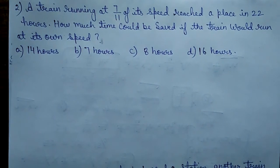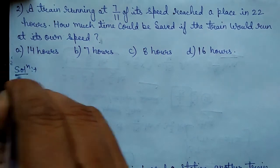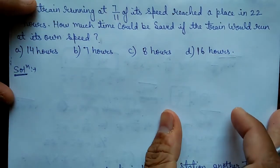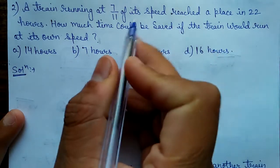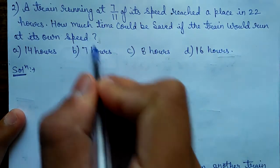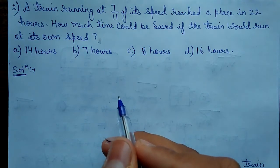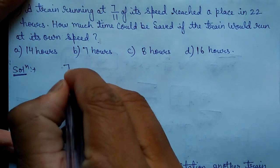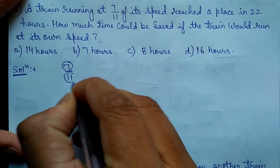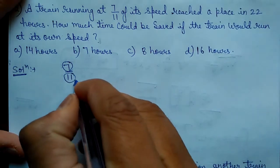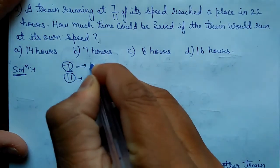See one more question — a train running at 7/11 of its speed reaches a place in 22 hours. I am solving this by the trick I told you. For 7/11: the numerator 7 is the usual time, and the denominator 11 is the delayed or actual time by which it is travelling.